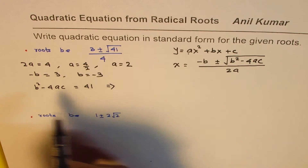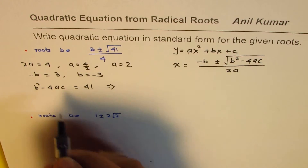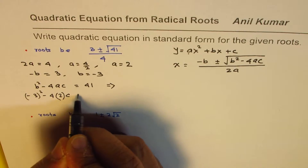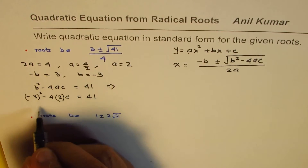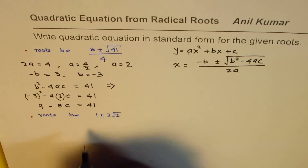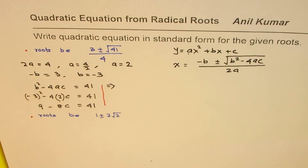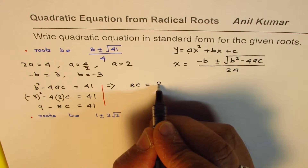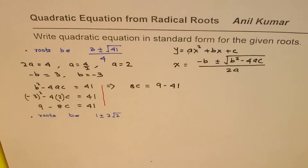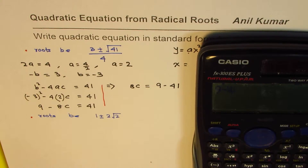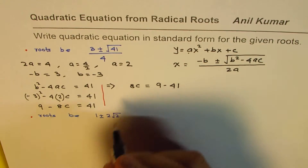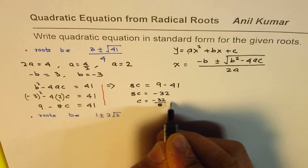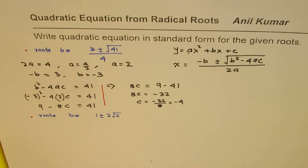Substituting: (−3)² − 4(2)(c) = 41, which gives 9 − 8c = 41. Taking 8c to the right side: 8c = 9 − 41 = −32. So c = −32 / 8 = −4.